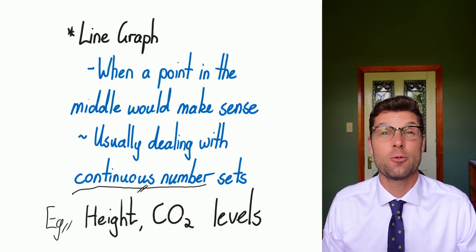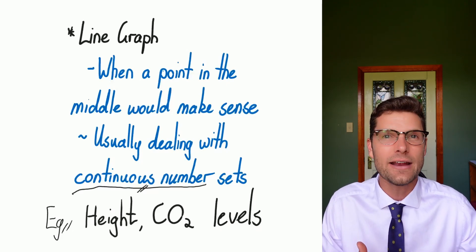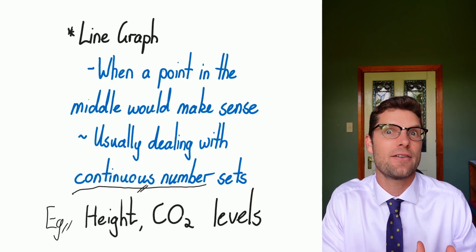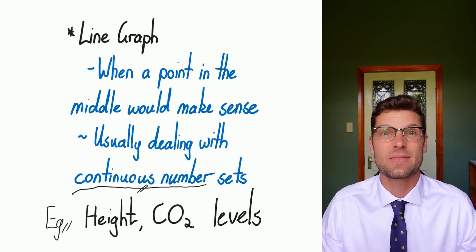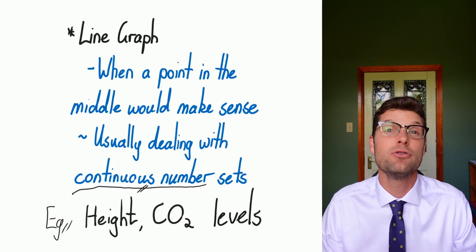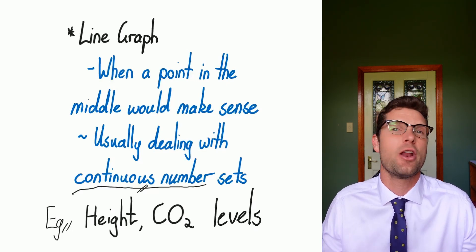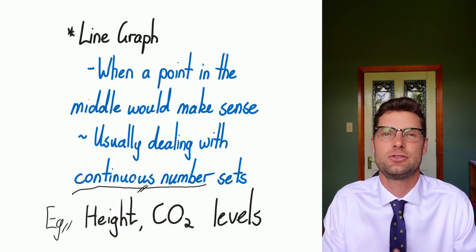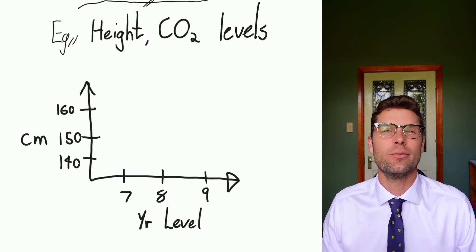This will work really well anytime you're measuring something. So if you're measuring height, you could have someone that's 170 centimeters and 170.5 centimeters — so these are continuous. Another example is CO2 levels in the atmosphere. It makes sense that we're not going to measure every single day, but we could guess in between two data points what the answer would be.